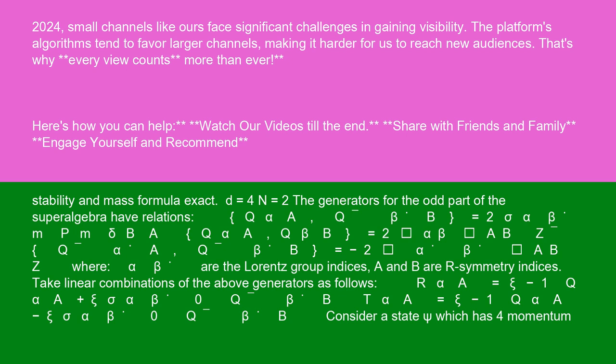For d=4, N=2, the generators for the odd part of the superalgebra have relations: {Q_αa, Q_βb} = 2σ^m_αβ P_m δ_ab; {Q_αa, Q_βb} = 2ε_αβ ε_ab Z; {Q̄_αa, Q̄_βb} = -2ε_αβ ε_ab Z̄, where α, β are the Lorentz group indices and a, b are R-symmetry indices.